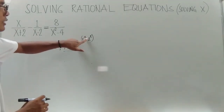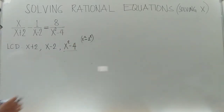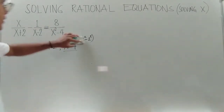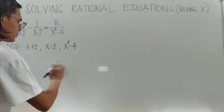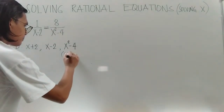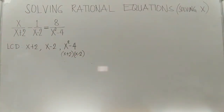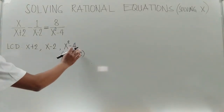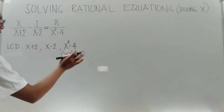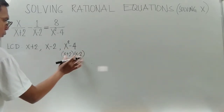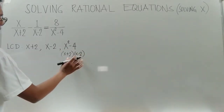So x squared minus 2 squared — the first term is a perfect square as well as the second term. The factors of a difference of two squares is the difference and the sum of a binomial. So we have x plus 2 and x minus 2. Therefore, x squared minus 4 in factored form is (x plus 2) times (x minus 2).